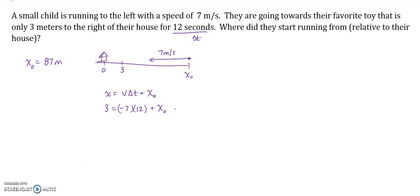Time is 12 seconds plus your initial position. I have no idea. At this point it's algebra. So you really get three equals negative 84 plus x sub naught, and then we're gonna add 84 to both sides to get it to go, and so then you get 87 meters is your initial position. That's your answer.